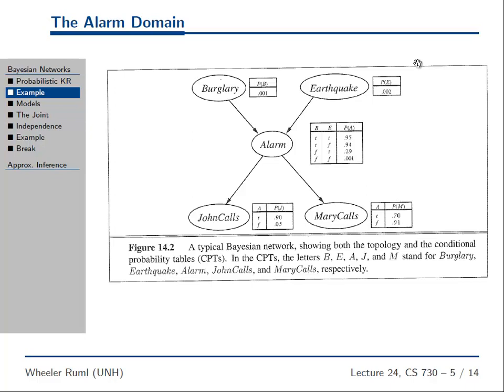So a Bayes net is actually a probability distribution over all the possible worlds, all the different states of the world. If you know the probability distribution, you can answer any query.